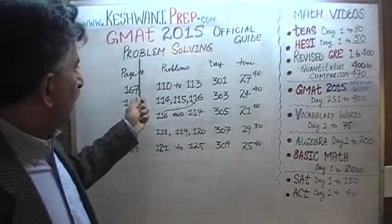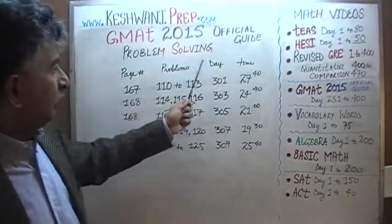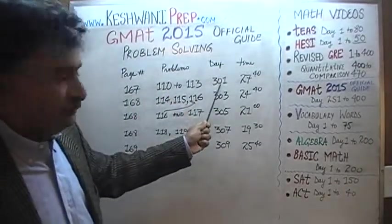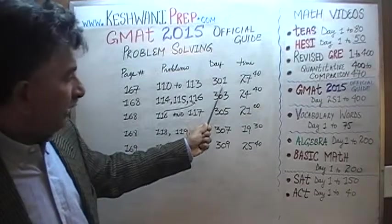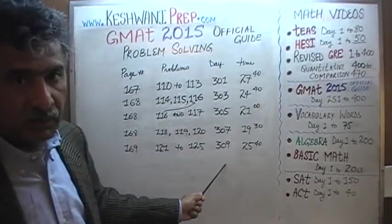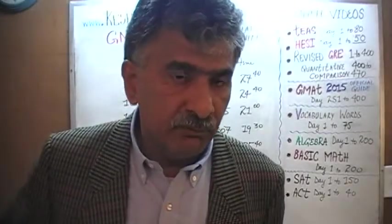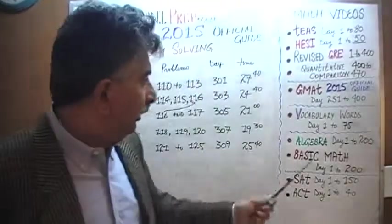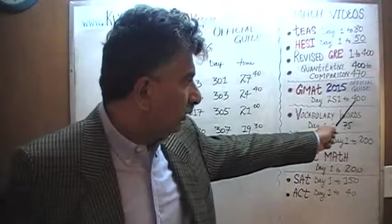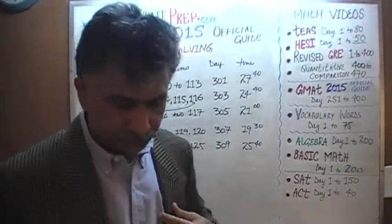As you can see, all the problem solving questions — the solutions to all the problem solving questions — appear on the odd number days: day 301, 303, 305, 307, and 309. And you will find the solutions to all the data sufficiency questions on the even number days, beginning with 252 all the way up to 400. Thank you.